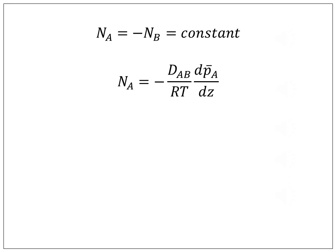Separating the variables for integration, we get integral dZ from Z1 to Z2 equals minus DAB by RT NA integral dpA bar from pA1 bar to pA2 bar.